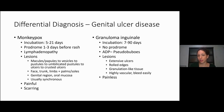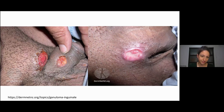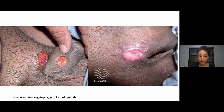Granuloma inguinale can also have a long incubation, no prodrome, no systemic symptoms. They can have large adenopathies that drain or are purulent. The ulcers can be extensive with rolled edges — sort of undermined — and granulation-like tissue that is very vascular and bleeds easily, and they're painless. So a genital ulcer that bleeds easily but is painless is pretty unique to this condition. The leftmost image shows what granulation tissue looks like — very red tissue that bleeds easily — with rolled, undermined borders.